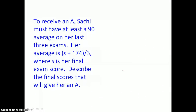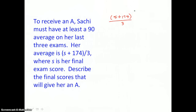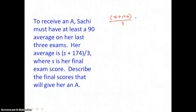In this example, to receive an A, Sashi must have at least a 90 average on her last three exams. Her average is the quantity S plus 174 divided by 3, where S is her final exam score. We want to describe the final scores that will give her an A. So we set her average, (S plus 174) divided by 3, greater than or equal to 90, since she must have at least a 90 average to receive an A.